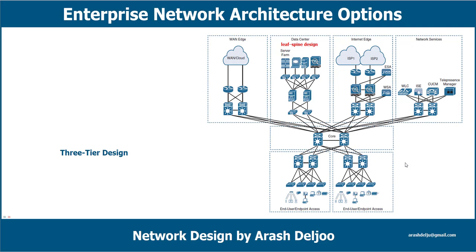When you need to use multiple distribution layer switches, you then use a core layer. For example, if you have one enterprise with multiple buildings, each building may need its own dedicated distribution layer switch. Because of that, you will end up with multiple distribution layer switches, and you can connect them to each other via the core layer. Another reason to use multiple distribution layer switches is when the density of WAN routers, internet edge devices, or data center servers and network services grows to the point where it can affect network performance and throughput.